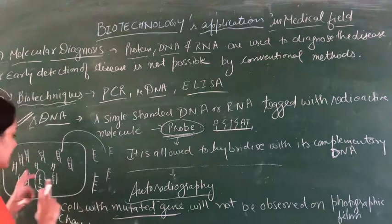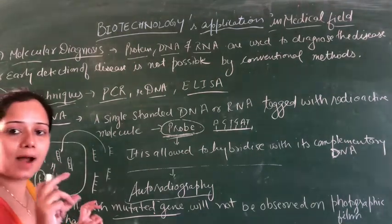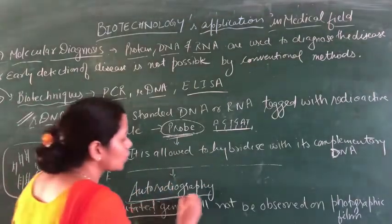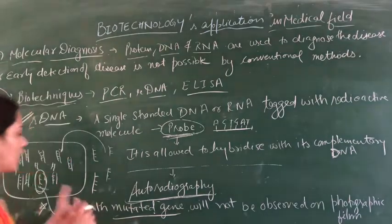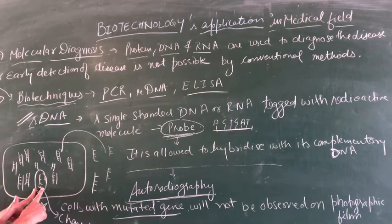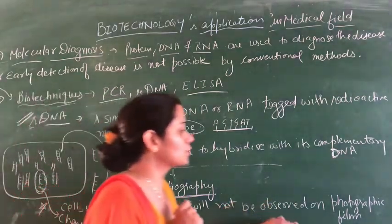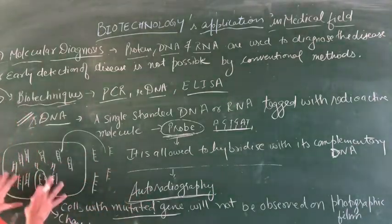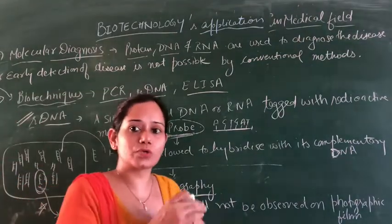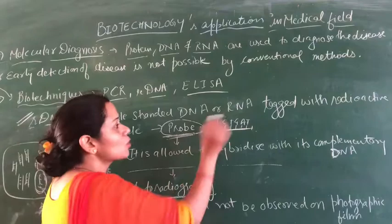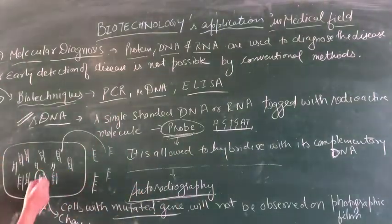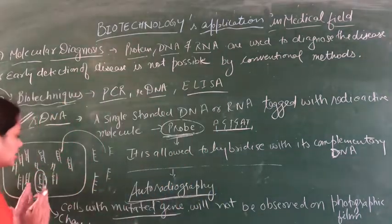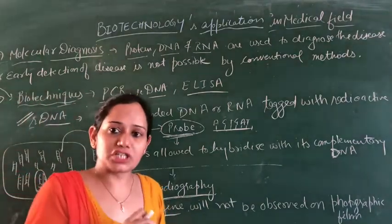The DNA will be single-stranded, and through hybridization we can identify the part where there is a mutation. After hybridization, we use auto-radiography. If a gene is mutated, it will not hybridize with the probe. So the mutated gene will not appear on the photographic film. The normal parts that were hybridized will show up, but the mutated gene will not be visible because it did not bind with the radioactive probe. This tells us that there is a mutation or disorder in that sequence.